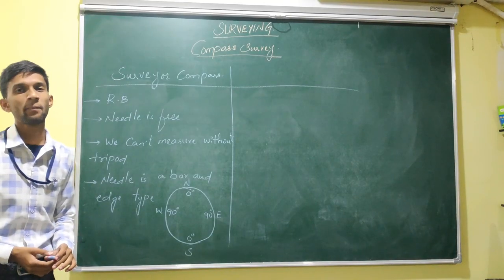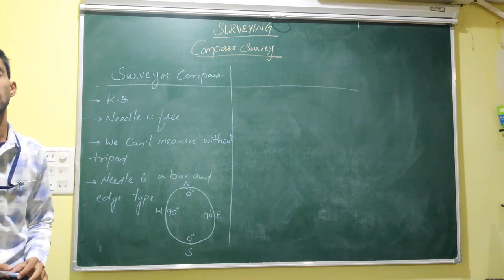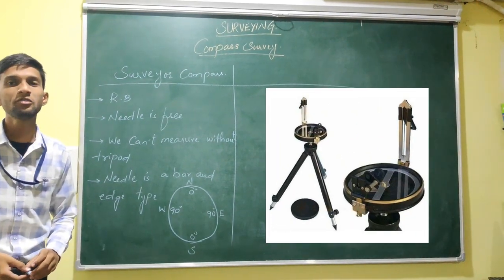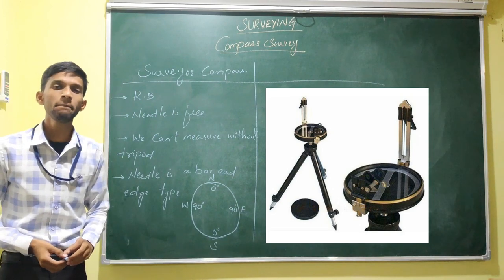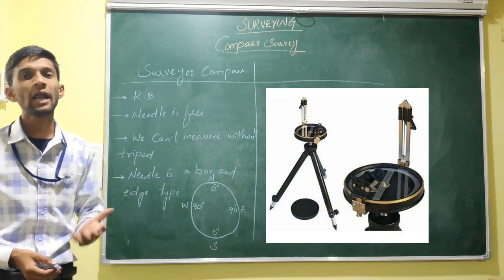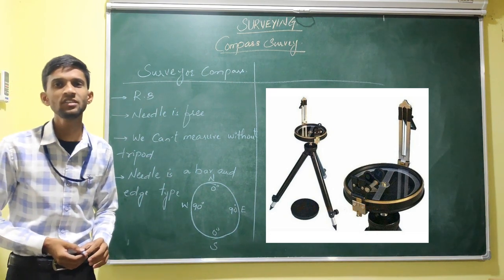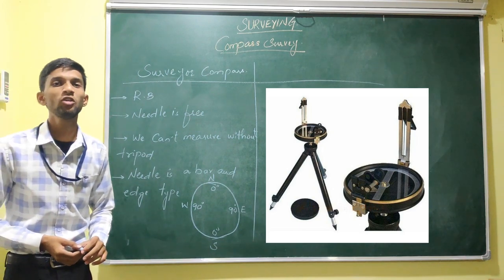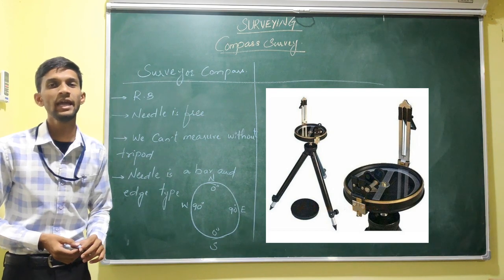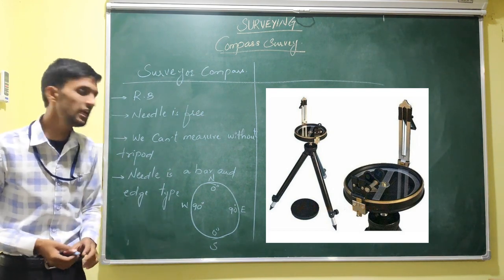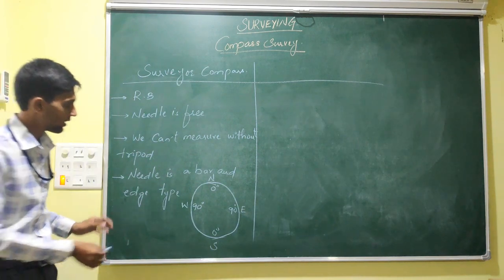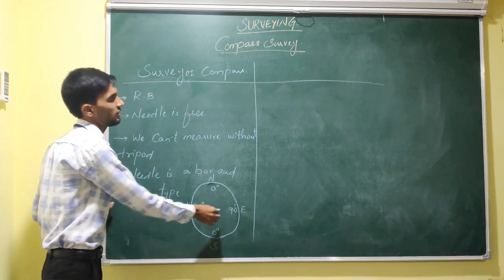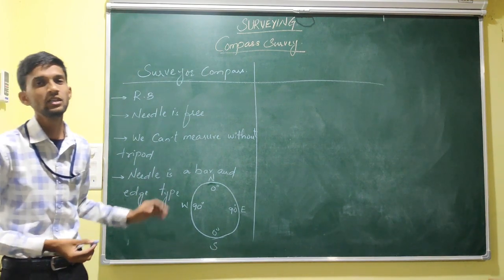There are two types of compass: one is the Surveyor compass and another is the Prismatic compass. With the Surveyor compass, we can measure reduced bearings. The graduation scale and box are fixed while the needle is free to move. Without the help of a tripod, we cannot measure any angles. The needle is a straight bar needle. In the plan, north and south have 0 degrees and east and west have 90 degrees.